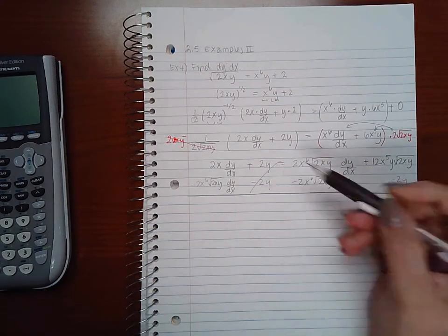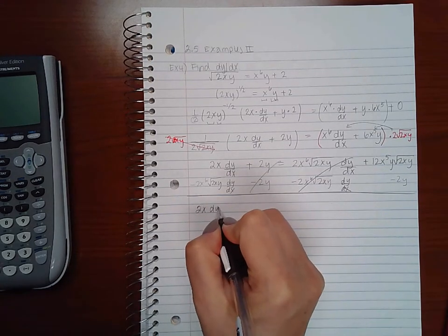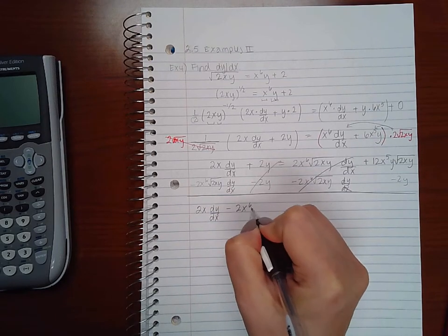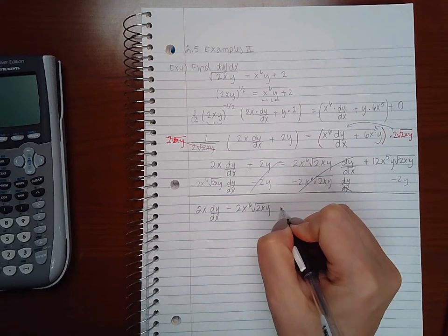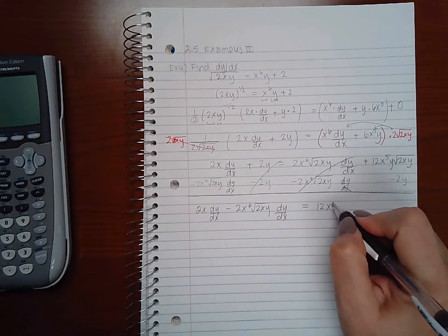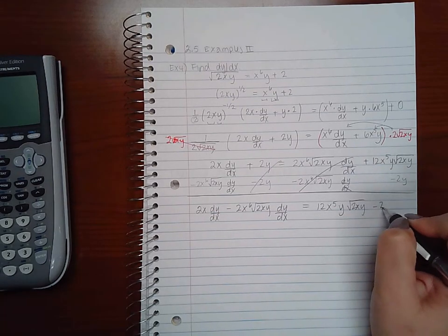So that this term cancels and this term cancels, so I end up with 2x dy/dx minus 2x to the 6 square root of 2xy dy/dx equal to 12x to the 5th y square root of 2xy minus 2y.